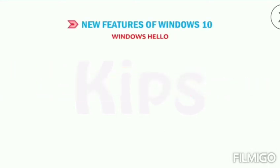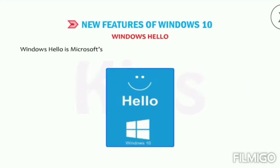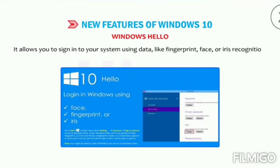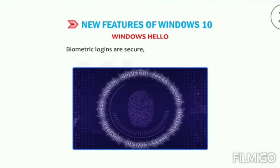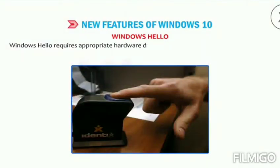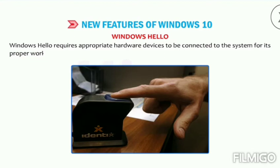Windows Hello — Windows Hello is Microsoft's new built-in biometric security system for Windows 10. It allows you to sign in to your system using data like fingerprint, face, or iris recognition. Biometric logins are secure, fast, and easy to create. Windows Hello requires appropriate hardware devices to be connected to the system for its proper working.